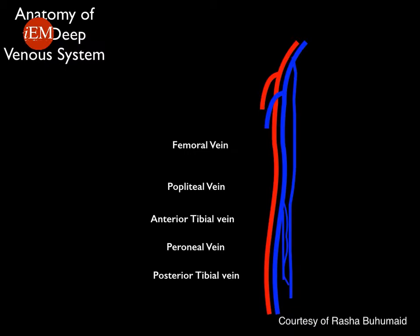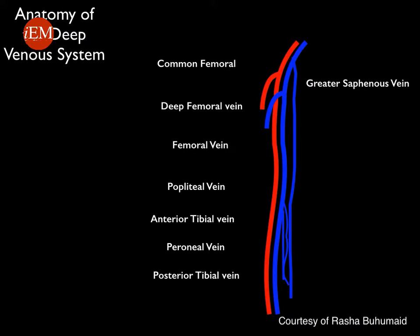The femoral vein is sometimes called the superficial femoral vein, which can be confusing — many people think it is part of the superficial system rather than the deep system. Therefore, many books now refer to it simply as the femoral vein. The femoral vein is joined by the deep femoral vein to become the common femoral vein, into which the greater saphenous vein drains. Just proximal to the inguinal ligament, the common femoral vein becomes the external iliac vein.